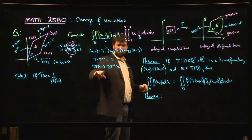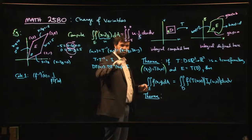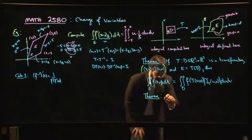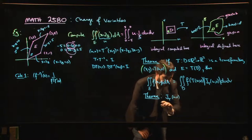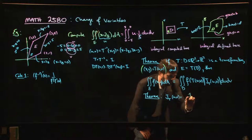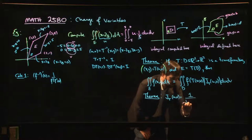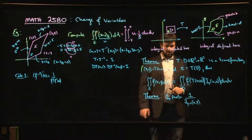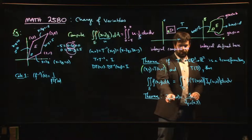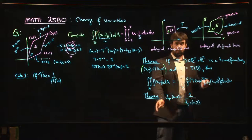And if we take determinants of everything, well we know what happens. This is going to be the Jacobian of T, this is going to be the Jacobian of T inverse. And what this tells me is that the Jacobian of T inverse - so let's do it this way - the Jacobian of T as a function of u and v is 1 over the Jacobian of T inverse as a function of x and y.